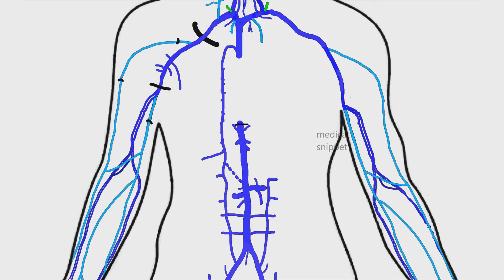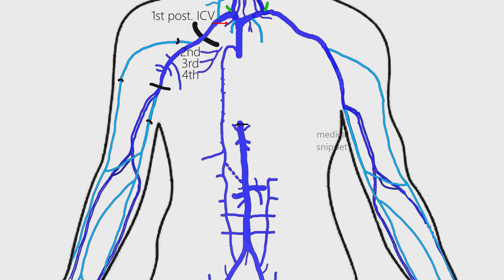The tributaries of the azygos vein are the posterior intercostal veins of the right side, except the first vein, as the first posterior intercostal vein drains into the right brachiocephalic vein. The second, third, and fourth posterior intercostal veins unite to form the right superior intercostal vein, and it drains into the azygos vein.